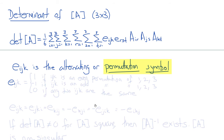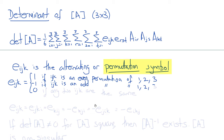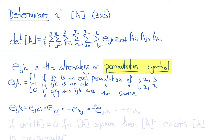The permutation symbol εijk equals +1 if i, j, k are all different and form an even permutation of 1, 2, 3 — that is, (1,2,3), (2,3,1), or (3,1,2). It equals −1 if i, j, k form an odd permutation, such as (3,2,1). It equals 0 whenever any two indices are equal. Therefore εijk = εjki = εkij (cyclic permutations) and equals −εkji = −εjik = −εikj. If the determinant of A is not zero, the inverse of A exists and A is said to be non-singular.